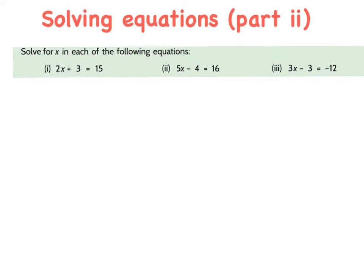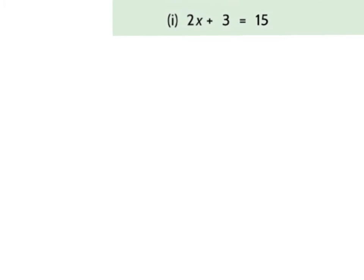We're now going on to solving equations part 2. Now the equation is a little bit longer: 2x plus 3 is equal to 15. If that plus 3 wasn't there, we'd know how to solve it. So the problem is we need to get rid of this plus 3. It's all about balancing. In order to get rid of the plus 3, I can take away 3 — plus 3 and minus 3 is zero. But what I do to one side I must do to the other, so I'm going to minus 3 on both sides. 2x plus 3 minus 3 cancels, and my new line is 2x is equal to 15 minus 3, which is 12.